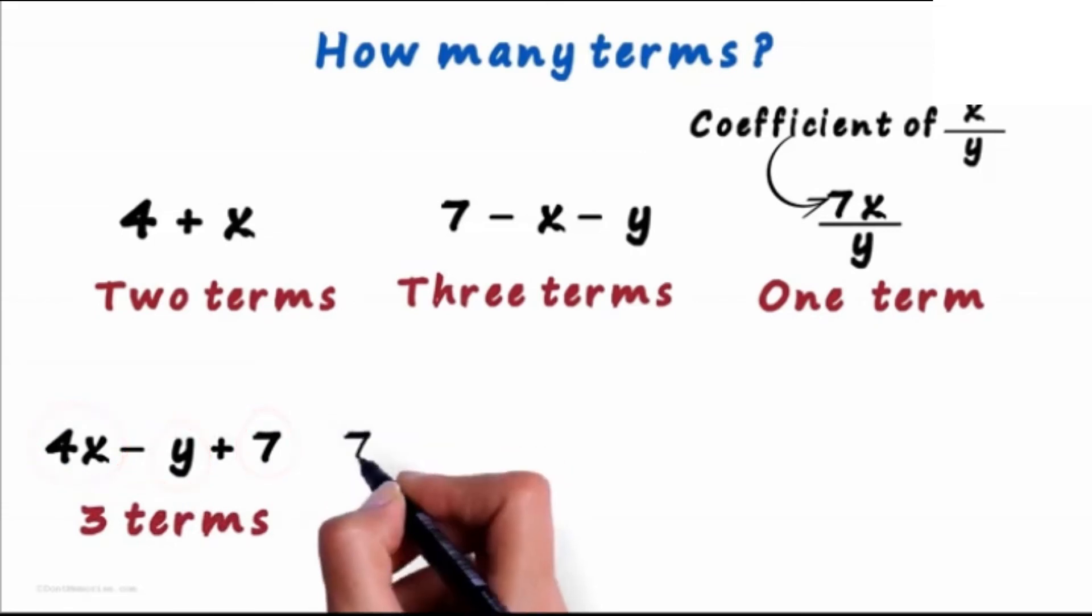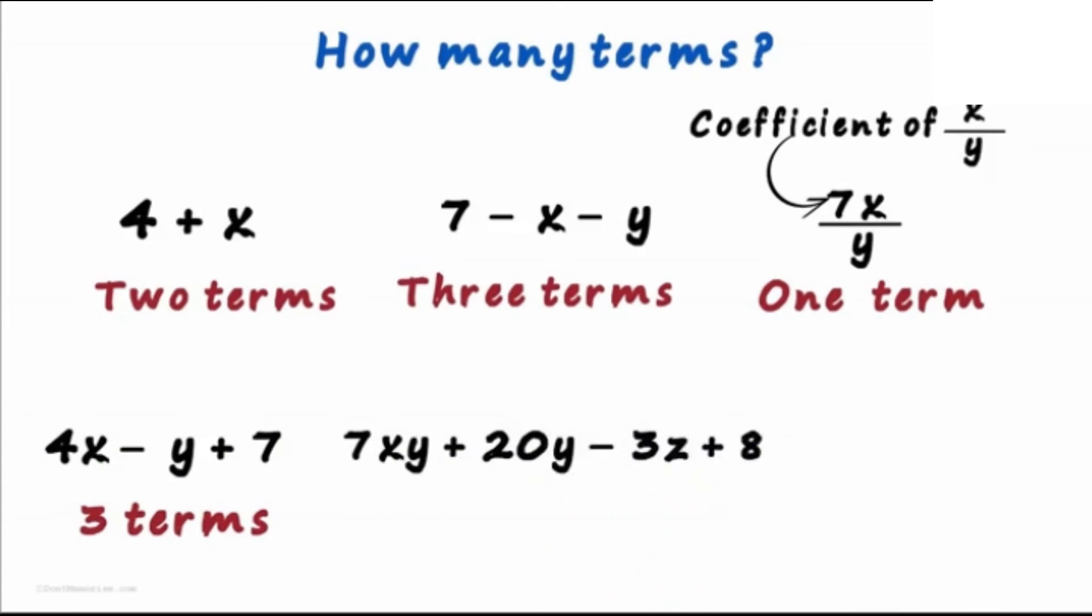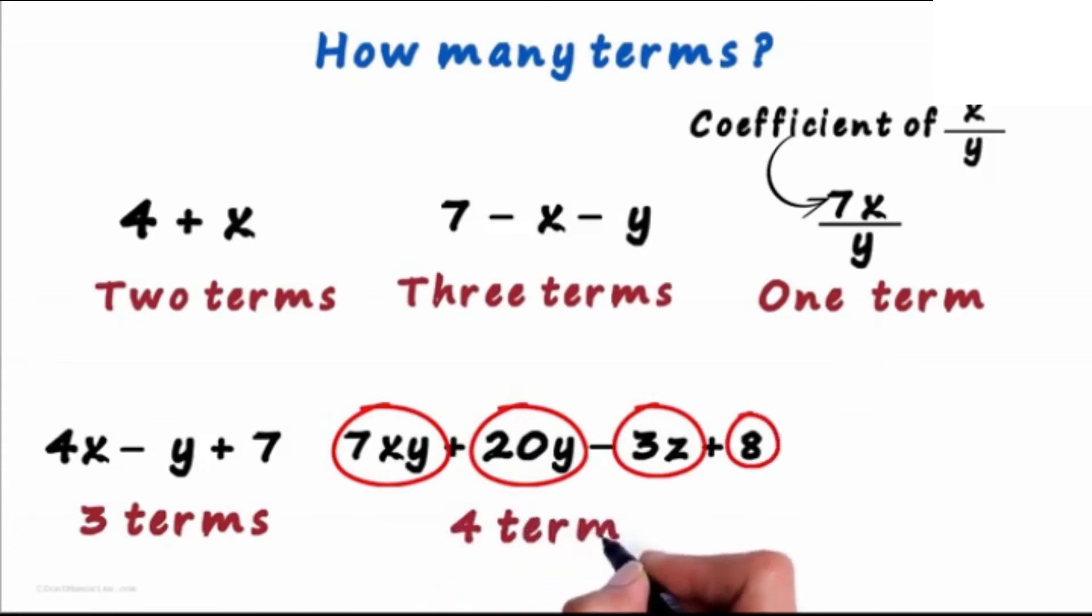What about 7xy plus 20y minus 3z plus 8? One term, 2, 3 and 4. Four terms in all. Each of these is one term.